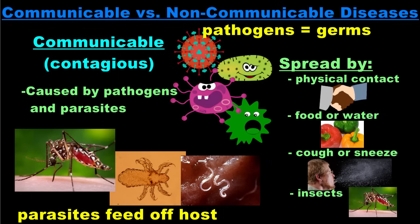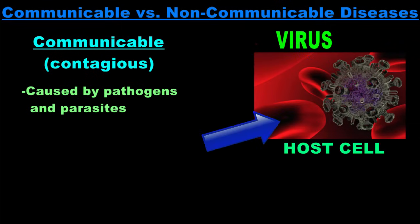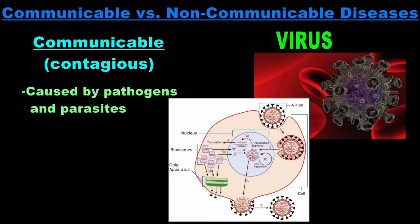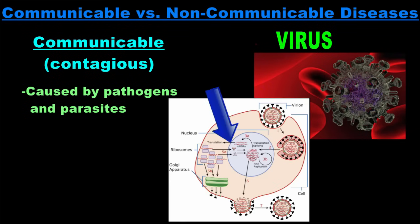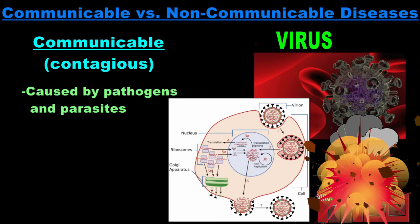There are a number of different kinds of pathogens and parasites, some of which may be familiar to you, while others may be new. One type of pathogen you've probably heard a lot about is viruses. Viruses are not considered living things, but they do need living cells to reproduce. These living cells are called host cells. A viral infection begins when a virus particle invades a cell, and the virus then hijacks the host's cellular machinery to produce new virus particles.